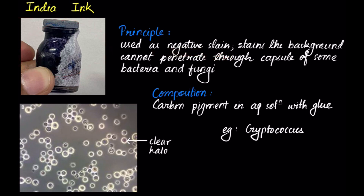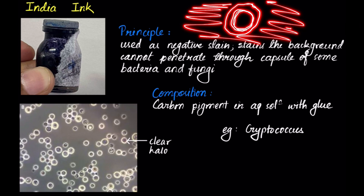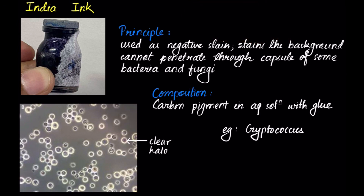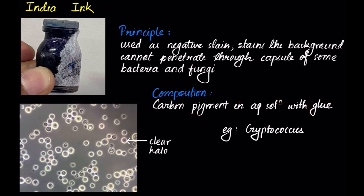Next, india ink — it is a type of negative stain. India ink stains the background but is unable to penetrate through the capsule of bacteria or fungi. As a result, the capsule appears as a clear halo around the organism. India ink is composed of carbon pigment in aqueous solution along with glue. For example, Cryptococcus fungi stained with india ink gives a clear halo around it due to the presence of a capsule.